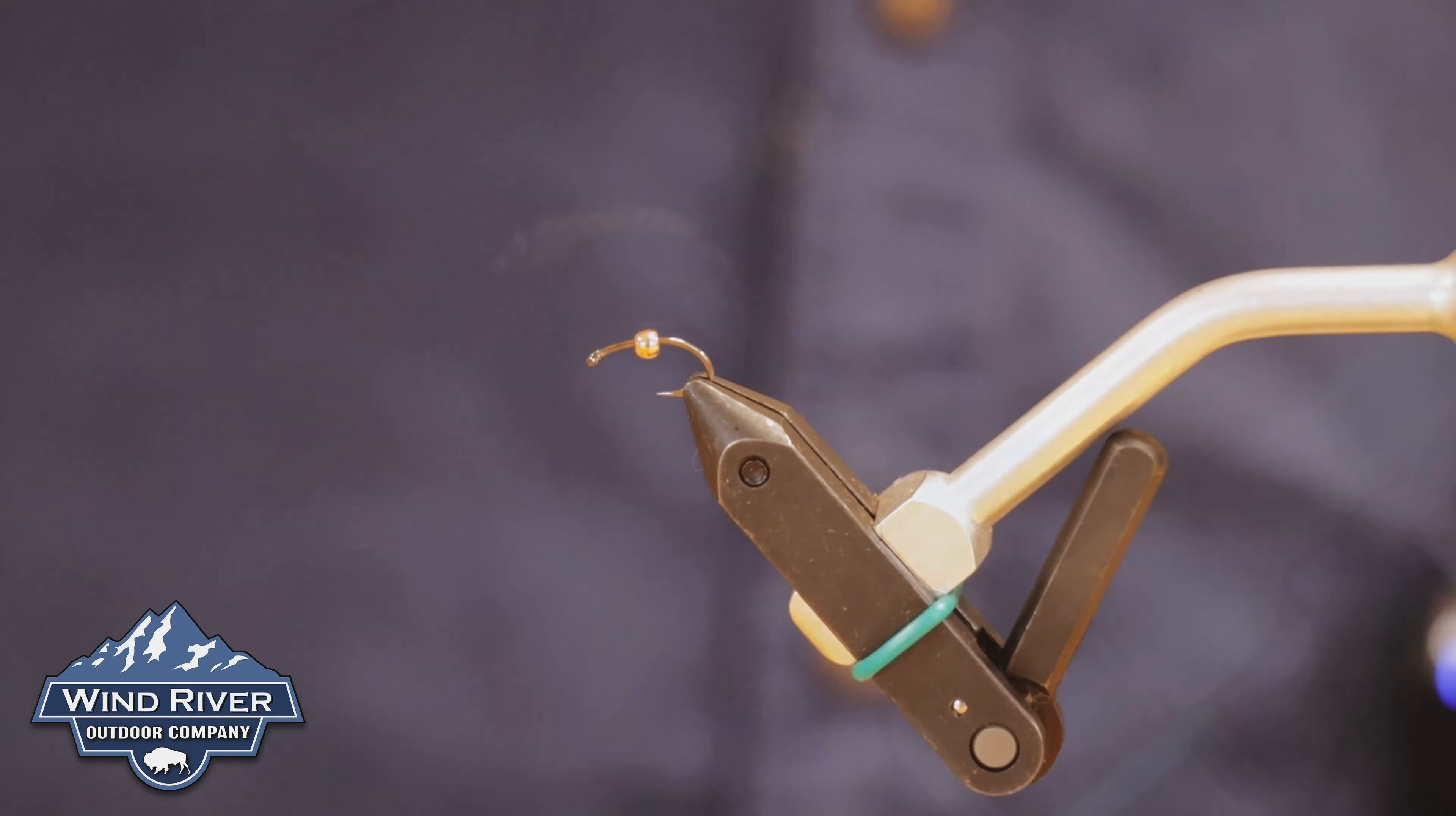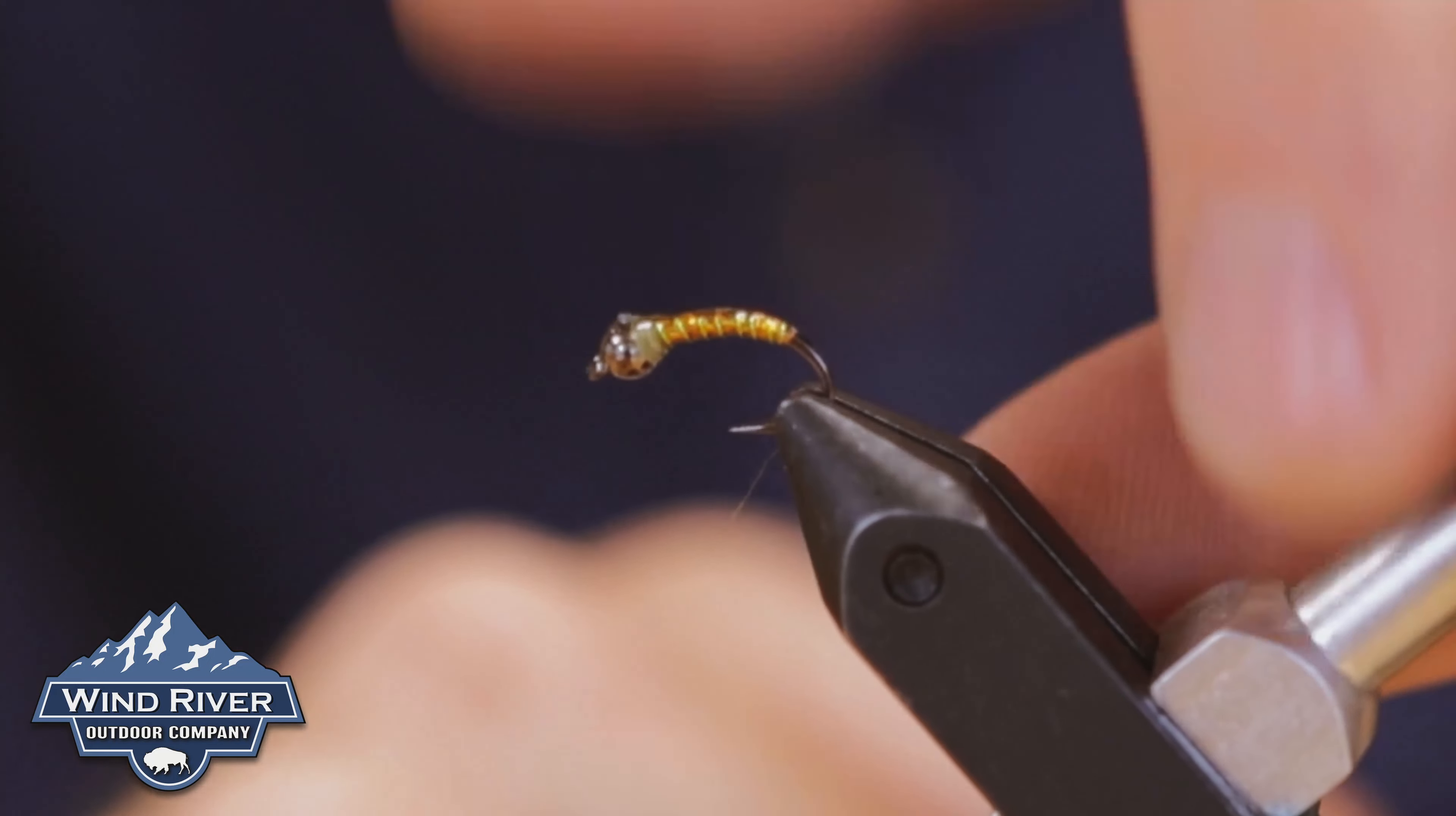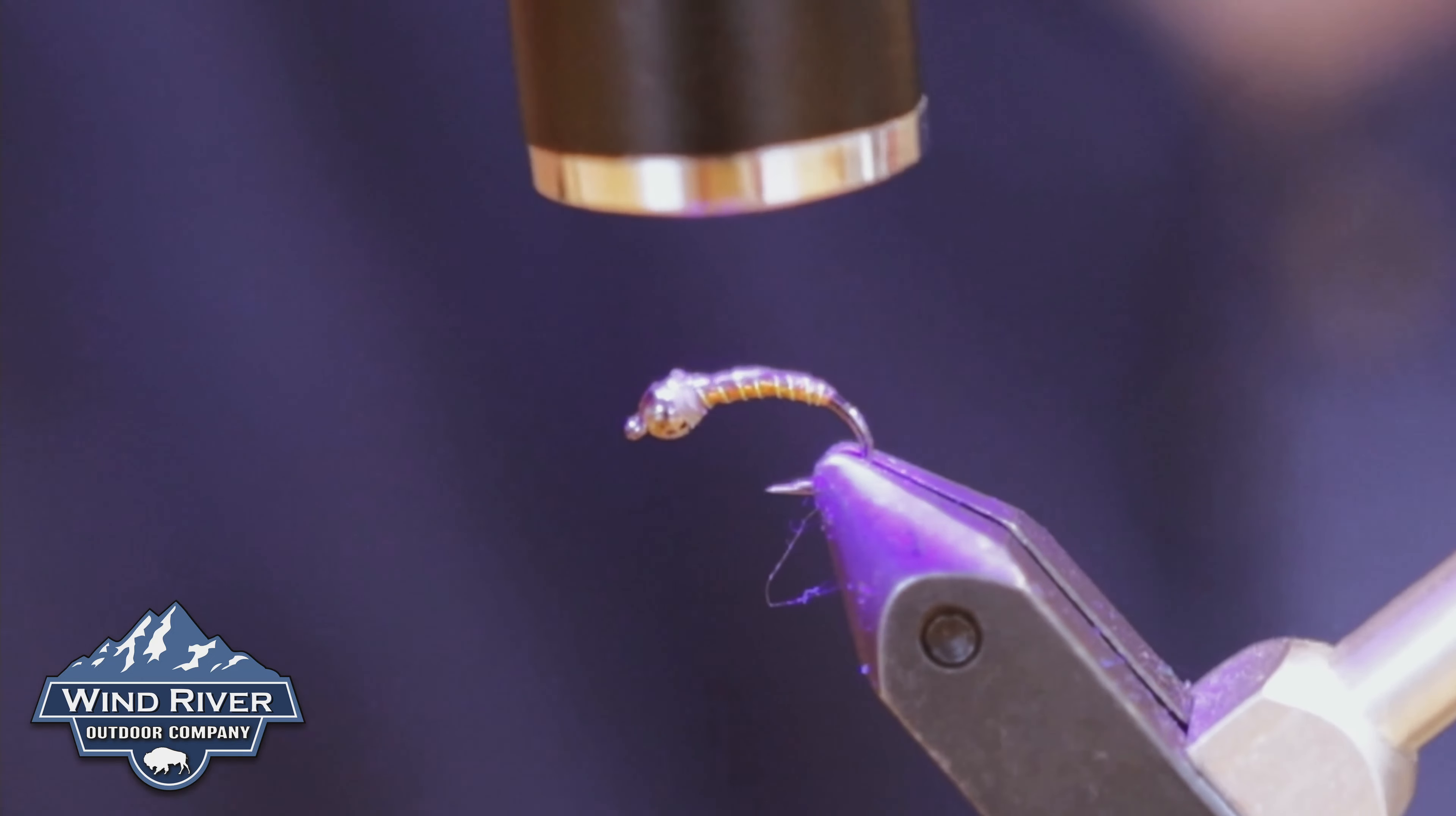I like to tie it with a black nickel bead. I think they both work really well and kind of transition from the body colors right into the bead there. For demonstration purposes, I'm going to be using the Fulling Mill FM 1167 Heavyweight Grub Black Nickel in a size 12.